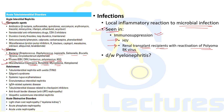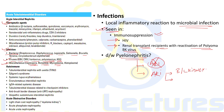Differentiating infection-induced AIN from pyelonephritis: pyelonephritis generally does not cause AKI, except in two conditions — if it affects bilateral kidneys or if it leads to septic shock, causing sepsis-induced acute tubular necrosis leading to AKI.